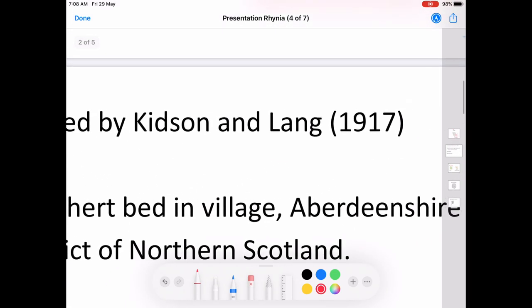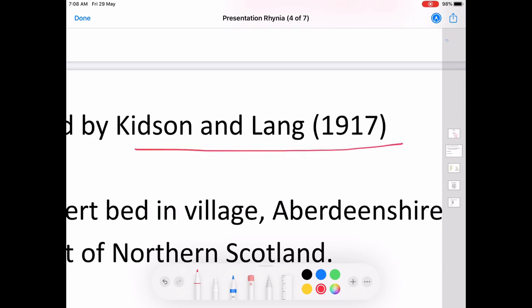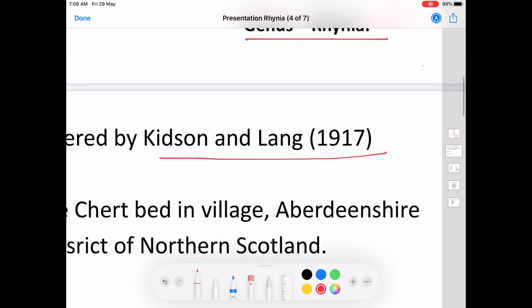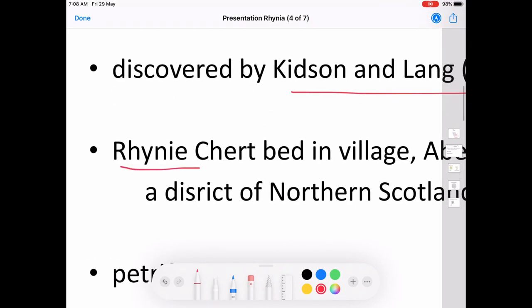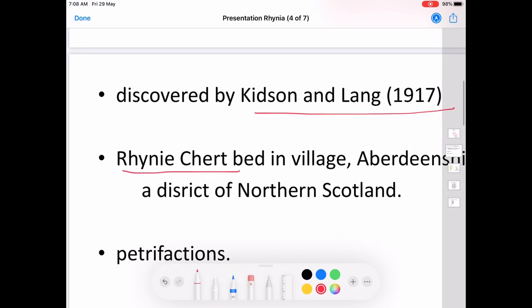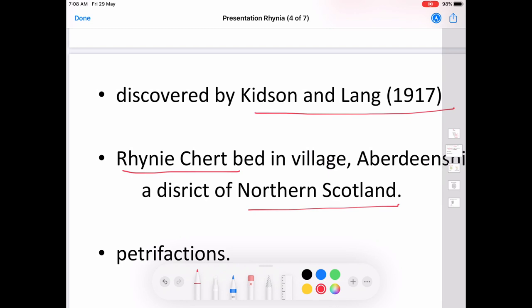It was discovered by Kitson and Lang in 1917 from the Rhynie Chert situated in northern Scotland. A chert is a rock consisting of fine particles of silica. Such a rock is situated in the place Rhynie, so the plant is given the name Rhynia.